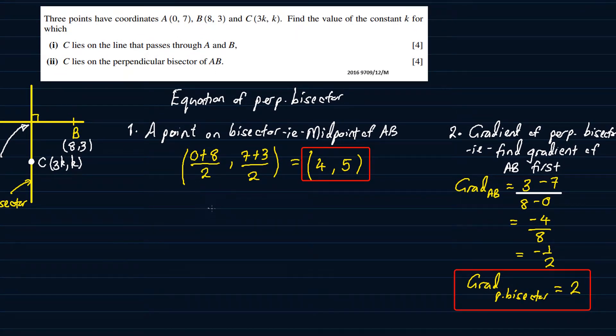So using these, we can now say y minus y1 is equal to m of x minus x1. That's y minus 5 is equal to 2 of x minus 4. That is going to give us y is equal to 2x minus 8 plus 5. And eventually, this is going to be y is equal to 2x minus 3.